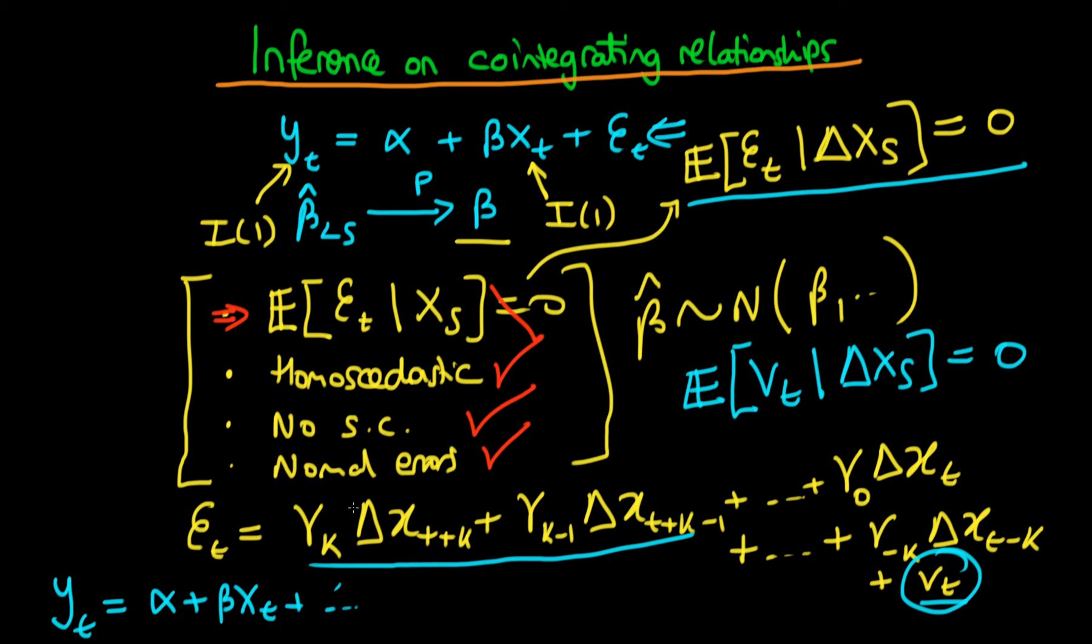It depends on whether you think it's likely that the error term is going to be correlated with some change in x t a long way in the future. Perhaps if you're dealing with monthly series, you might want to include these leads and lags up to the 12th lead in the future and the 12th lag behind. But in principle you might not have enough data to do that, so it kind of depends on your data as to how many leads and lags you need to include. But the idea is if you include all of these leads and lags, then you'll be left with an error vt, and the idea with this vt is it will be by construction strictly exogenous.